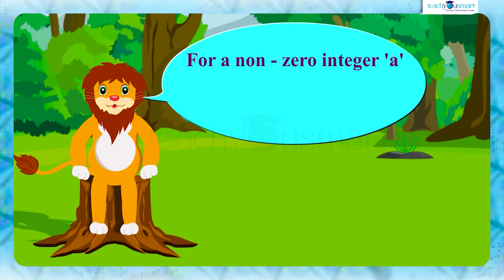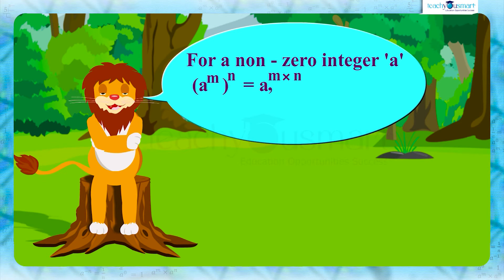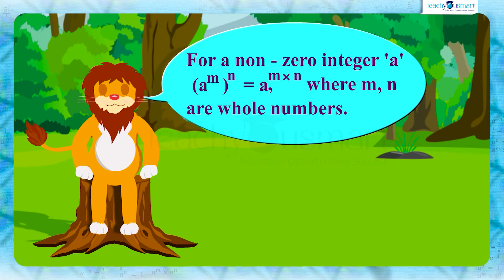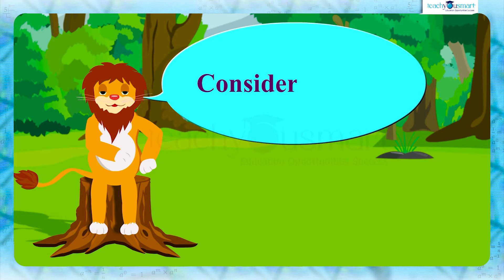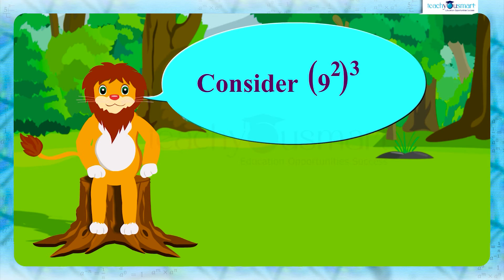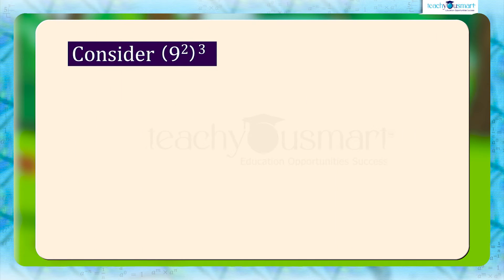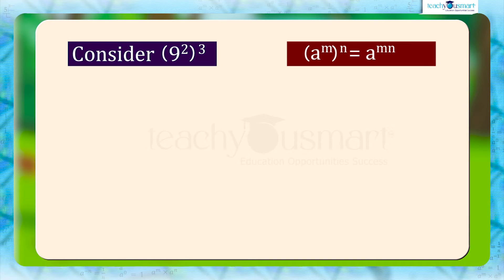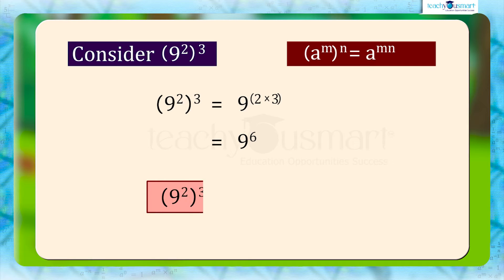For a non-zero integer a, a raised to m, whole raised to n, equals a raised to m multiplied by n, where m and n are whole numbers. Consider 9 raised to 2, whole raised to 3. We can write: a raised to m, the whole raised to n, equals a raised to mn. So 9 squared, the whole cubed, equals 9 raised to 2 multiplied by 3, equals 9 raised to 6. Does this law also hold if the exponents are negative?